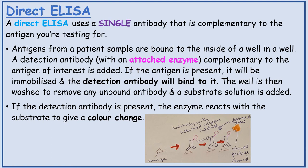Direct ELISA. A direct ELISA uses a single antibody that is complementary to the antigen you're testing for. Antigens from a patient sample are bound to the inside of a well. A detection antibody with an enzyme attached, complementary to the antigen of interest, is added. If the antigen is present, it will be immobilised and the detection antibody will bind to it.